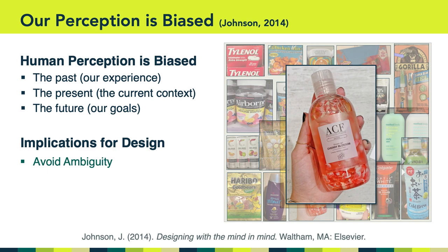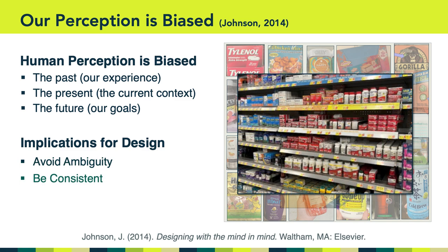Another implication for design covered in the Johnson piece is being consistent. Dalen pointed out the consistency that Tylenol uses in branding its products — all of those boxes have the same red color, the same white font, and more or less the same shading. Over time, Tylenol becomes very recognizable and really jumps off the shelf. That consistency allows users to spot and recognize the brand very quickly and with minimal effort.